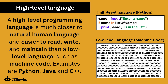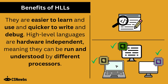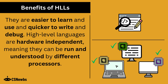A high-level programming language is much closer to natural human language, making it easier to read, write and maintain than a low-level language such as machine code. High-level languages are easier to learn and use, and quicker to write and debug. They are also hardware independent, meaning they can be run and understood by different processors.